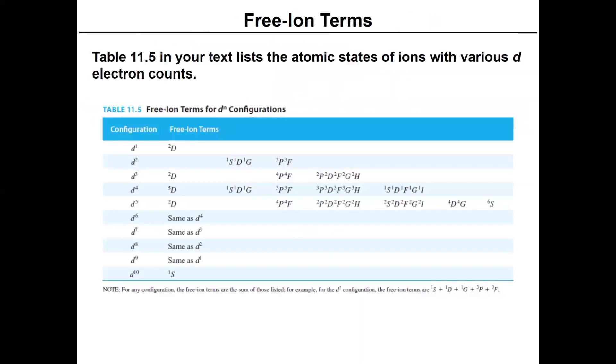If you work through all of these free ion terms and they get more complicated, imagine D3, D4, D5, it's all worked out for you in this table. Nothing else really to concern yourselves with in any of these cases, but you can get to a lot of free ion terms.